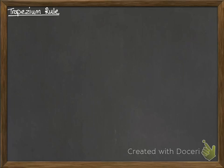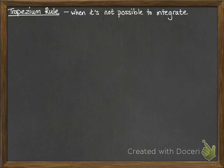Okay, so we use the trapezium rule when it's not possible for us to integrate. If you can integrate algebraically, you should choose to do that. This is for situations where it's a function you don't know how to integrate.